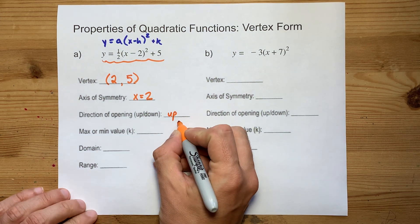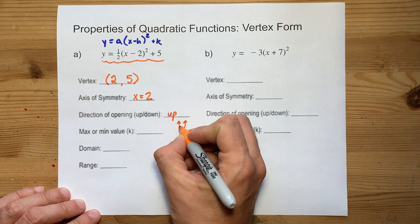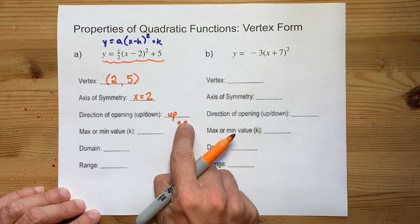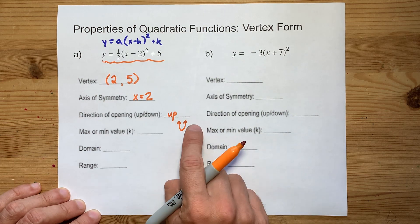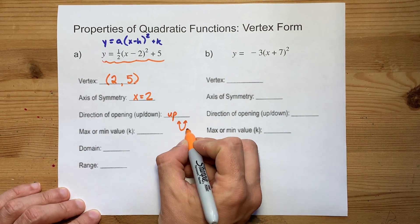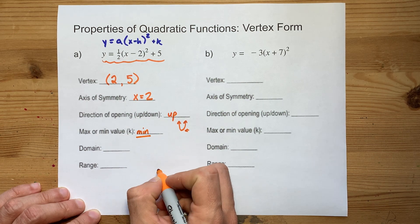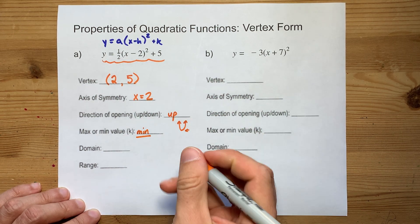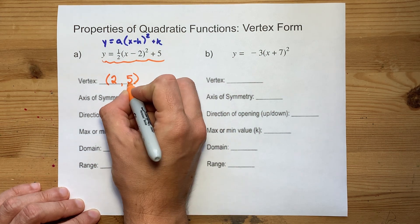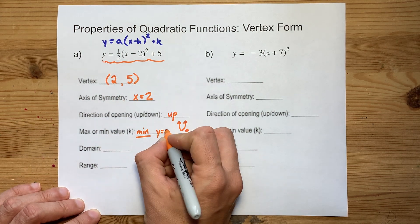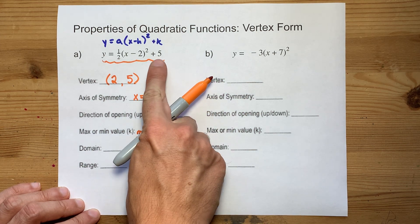If the parabola opens up, there's no limit to how high it can go — see how the arrows are pointing up. But there is a limit to how low it can go, so there is a minimum. The minimum itself is y equals the y-coordinate of the vertex. That 5 is the same as that 5.